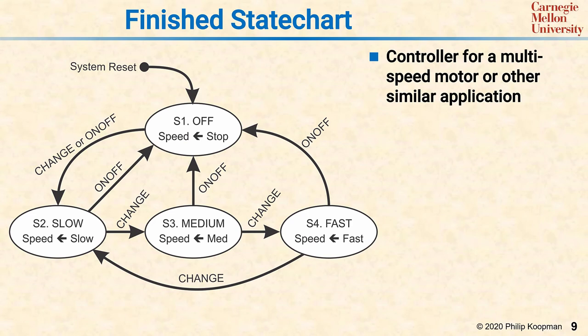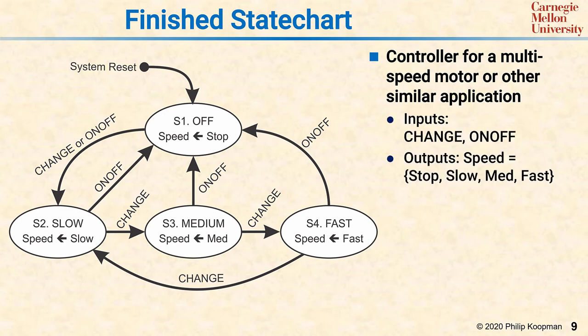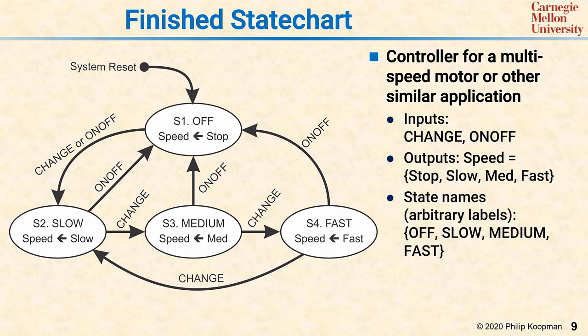Back at a high level, we have a finished state chart with states and transitions and a reset. It has inputs of change speed and on-off. It has an output of speed that could be stop, slow, medium, or fast. And it has state names corresponding to the states of off, slow, medium, and fast. The system reset is to state one.